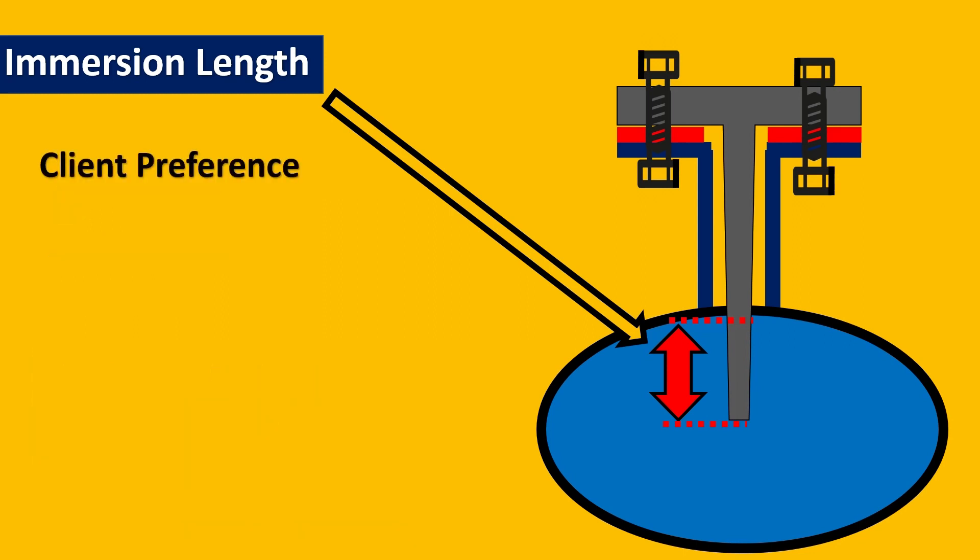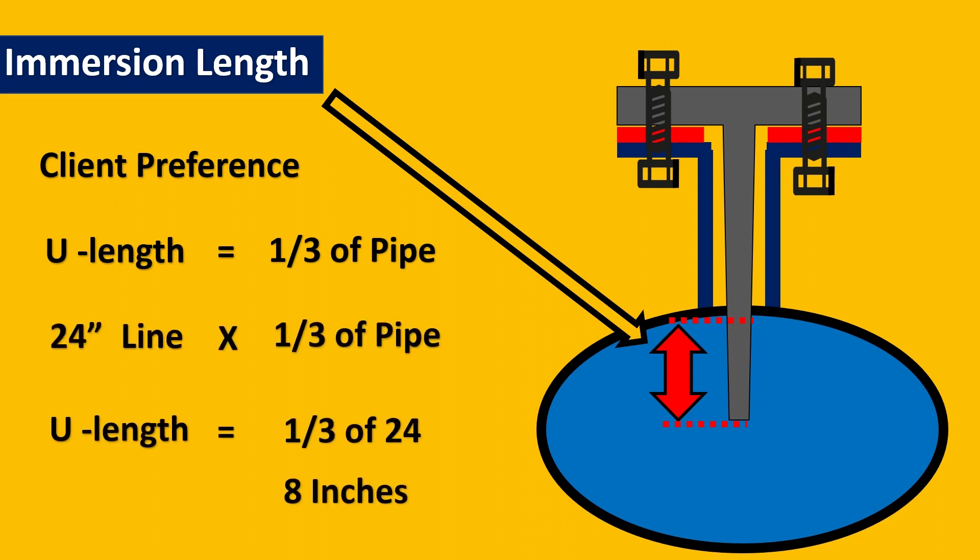Finally, certain clients have their own preferences. For example, the U-length they say should be 1/3 of the pipe. So if you have a 24 inch line times 1/3 of pipe, it is going to be 8 inches. So basically the client wants that it should go around till 8 inches. So you have to depend upon what criteria you use for immersion.